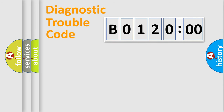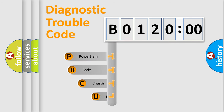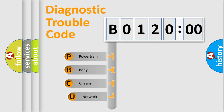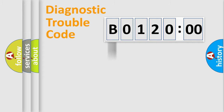First, let's look at the history of diagnostic fault code composition according to the OBD2 protocol, which is unified for all automakers since 2000. We divide the electric system of an automobile into four basic units: Powertrain, Body, Chassis, and Network.